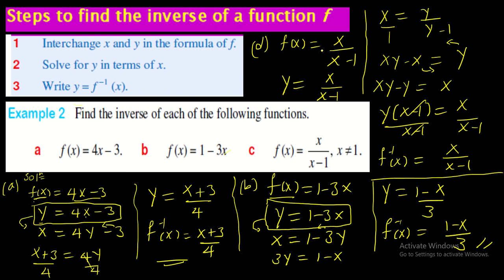For the fractional example, f(x) = x/(x - 1). Write y = x/(x - 1), then exchange to get x = y/(y - 1). Cross-multiply: xy - x = y. Bring all y terms to one side: xy - y = x. Factor out y: y(x - 1) = x. Divide both sides by (x - 1), so y = x/(x - 1). This y is the inverse — that is how we find the inverse of a function following the three steps.